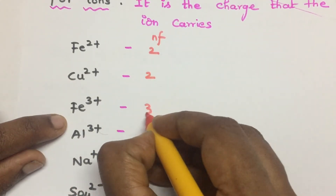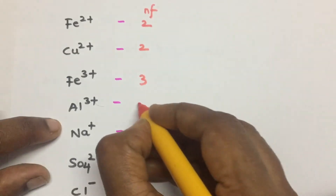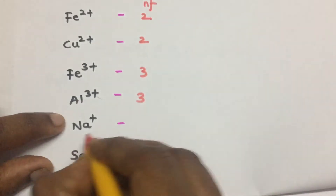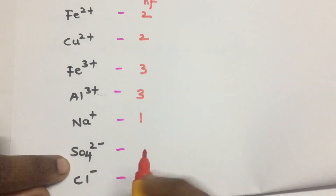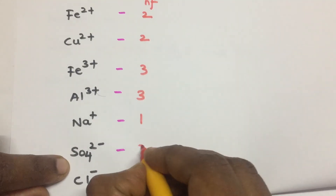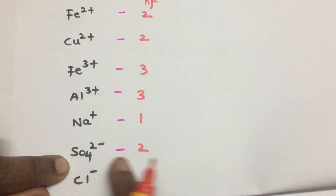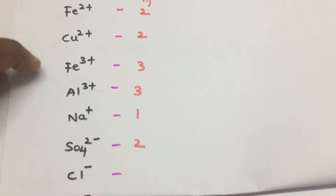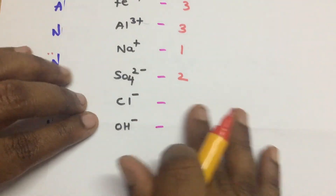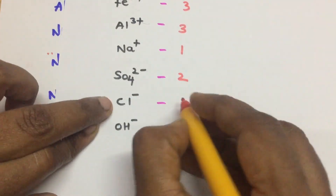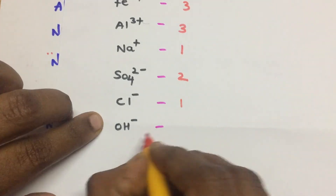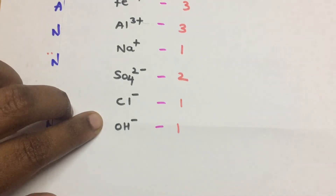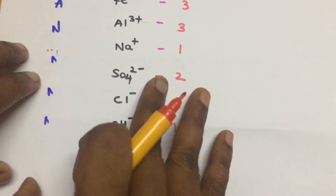For ions: Fe3+ has N-factor 3, Al3+ has N-factor 3, Na+ has N-factor 1, SO4²⁻ has N-factor 2.